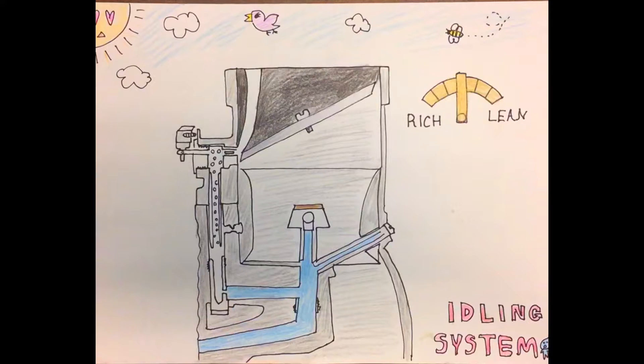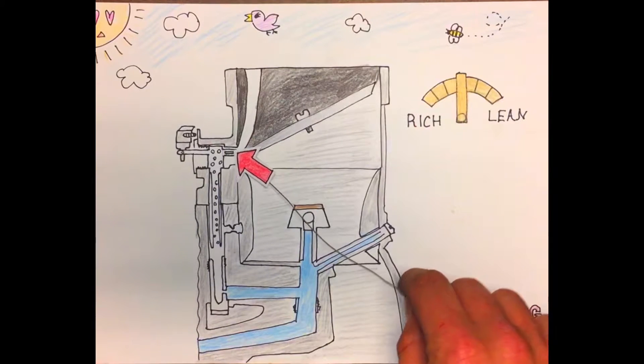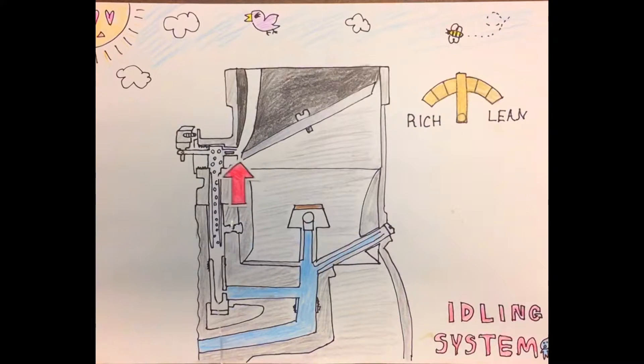Most carburetors have an adjustable thumb screw to control the amount of fuel put into the air stream. As you can see with this one, it has a mixture control knob instead of the thumb screw. By turning the thumb screw in, it leans the idle mixture, which means it reduces the fuel that's discharged. By turning it the opposite way, it adds fuel to the mixture or enriches it.